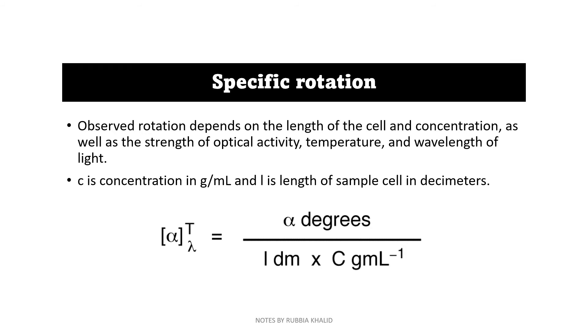Next, we have specific rotation. Observed rotation depends on the length of cell and concentration as well as the strength of optical activity, temperature, and wavelength of light. In this formula, C is concentration which is gram per milliliter and length is the sample cell in decimeter.